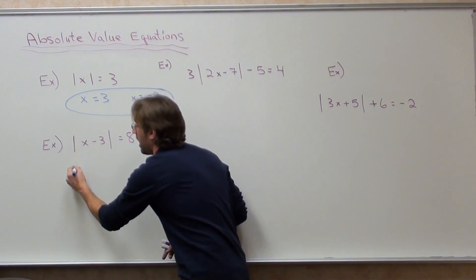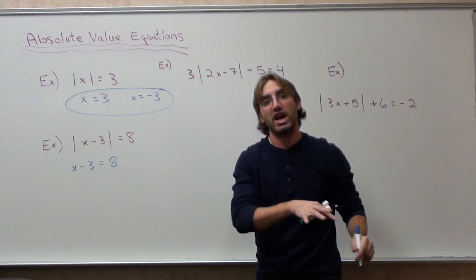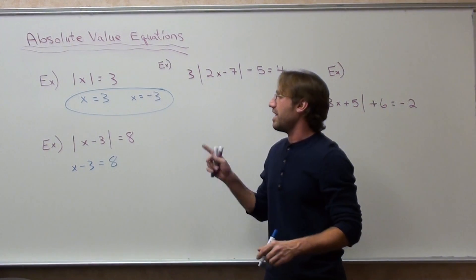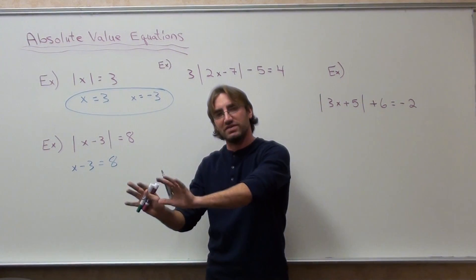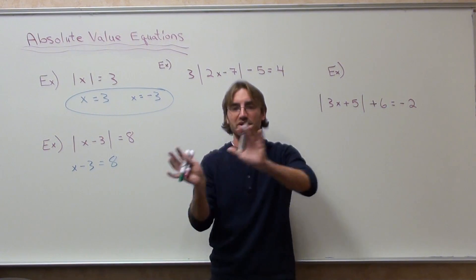We're going to do x minus three equals eight and solve for x. And then, besides doing its positive distance away from zero, we're going to do the other one, the opposite side.